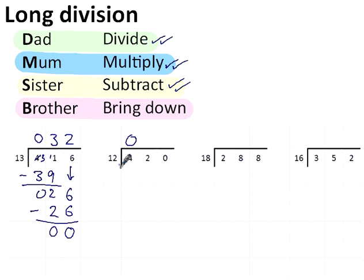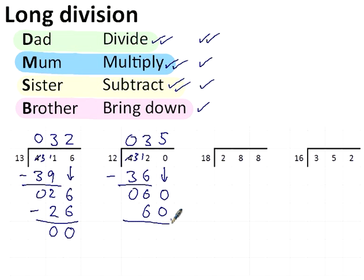12 into 4 doesn't go. 12 into 42 goes 3 times. That's division done. 3 times 12 is 36. That's multiplication done. Subtraction. That's subtraction done. Bring down. 12 into 60. That goes 5 times. That's my second division. 5 times 12 is 60. That's the multiplication done. Subtraction. 0 take away 0, 0. 6 take away 6 is 0. That's the subtraction done. So the answer is 35.